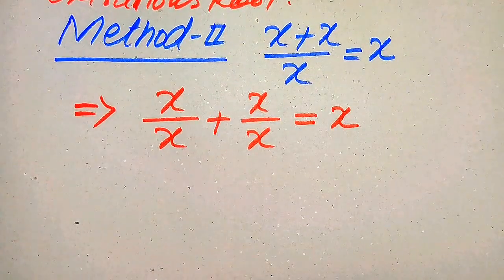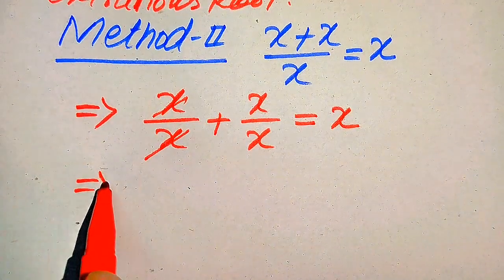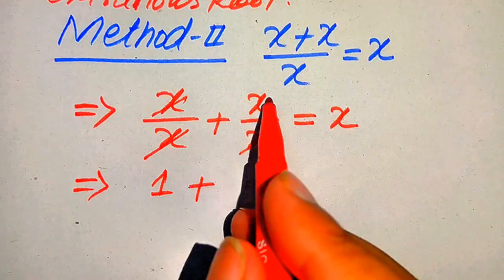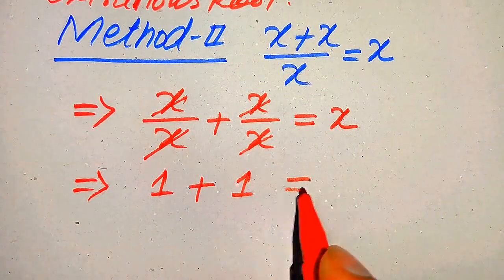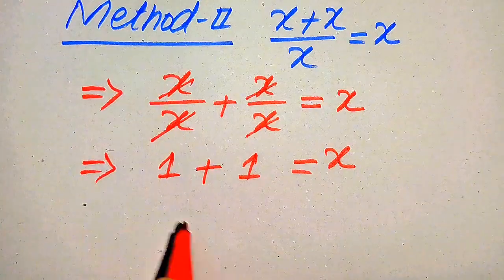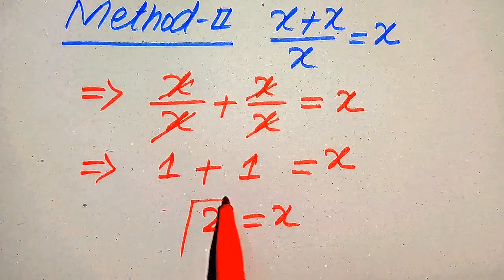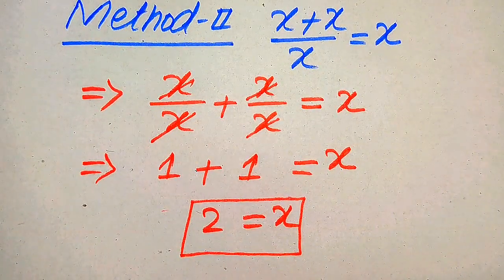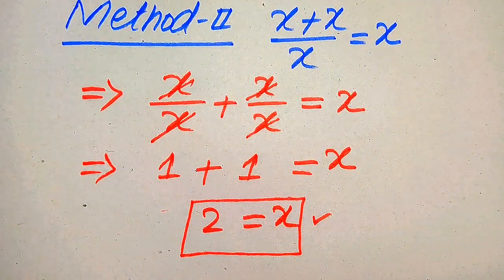Here, x cancels with x to give 1, and in the same pattern the next x cancels with x to also give 1. So we get 1 plus 1 equals x, which means 2 equals x. This is the value of x from the second method, and we already verified that x equals 2 satisfies the given equation.